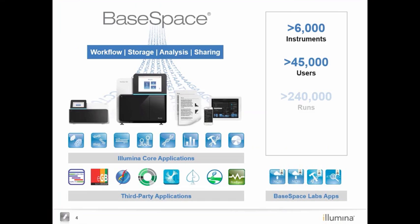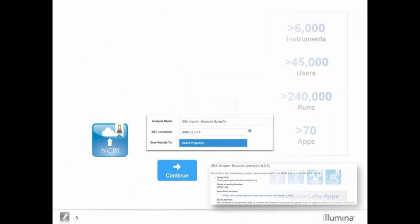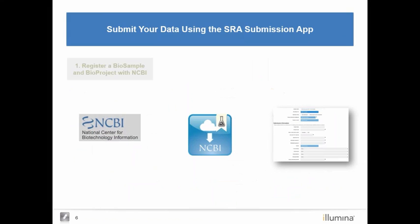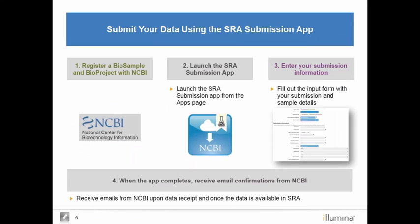Many of you are probably familiar with BaseSpace. It's a very large platform run by Illumina, which is a private company. It's trivial to upload data from Illumina sequencing machines to BaseSpace. What you may not know is that you can easily import samples into BaseSpace from SRA, and you can also load samples to NCBI from BaseSpace using the SRA submission app. Typically, BaseSpace does not have the metadata required for SRA, so BaseSpace provides an input form with submission and sample details, and then everything is submitted to SRA.